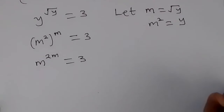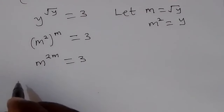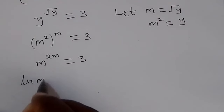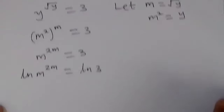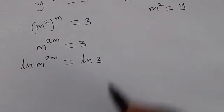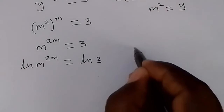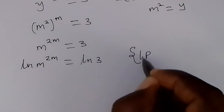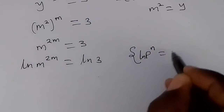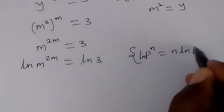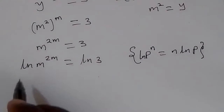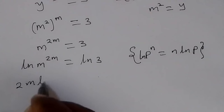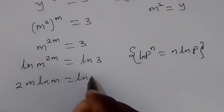Now let us take natural logarithms on both sides. We have ln of m raised to 2m equals ln 3. By the power rule — ln(p^n) equals n·ln(p) — this exponent comes down, so we have 2m·ln(m) equals ln 3.